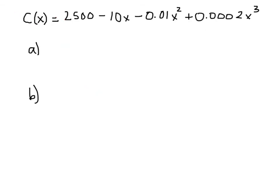So let's go ahead and do that. In part A, they asked for the marginal cost function, which is the derivative of C(x). So I'm going to do C'(x) and then compute the derivative function here. 2500 is 0. The next term is negative 10. The next term is negative 0.02x. Be careful with your zeros—there's quite a few of them in this problem. This last term is 0.0006x². This is our marginal cost function.